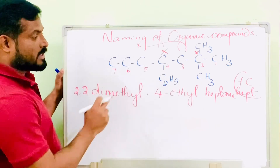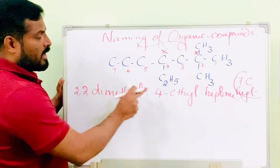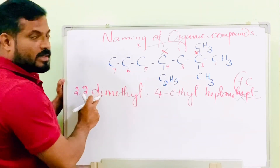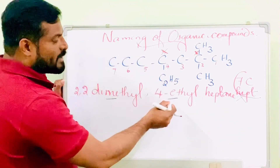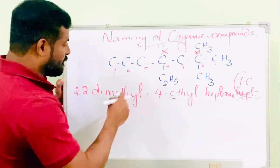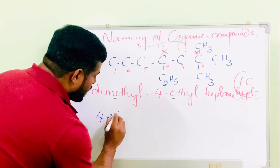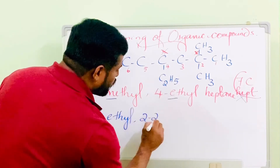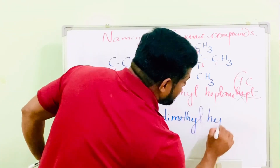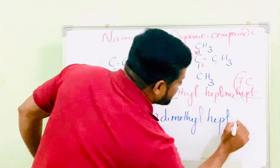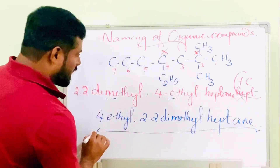Writing '2,2-dimethyl-4-ethylheptane' would be wrong because substituents must be arranged in alphabetical order. When applying the alphabetical order rule, we do not consider prefixes like 'di-,' so we compare 'e' for ethyl versus 'm' for methyl. 'Ethyl' comes before 'methyl' alphabetically, so ethyl is written first. The correct name of this compound is 4-ethyl-2,2-dimethylheptane.